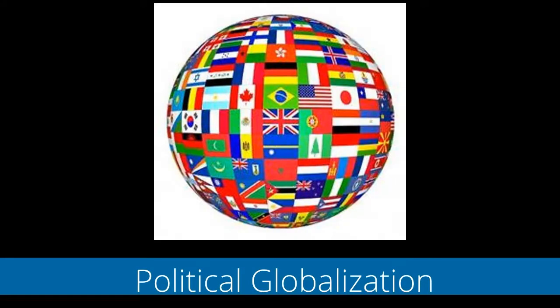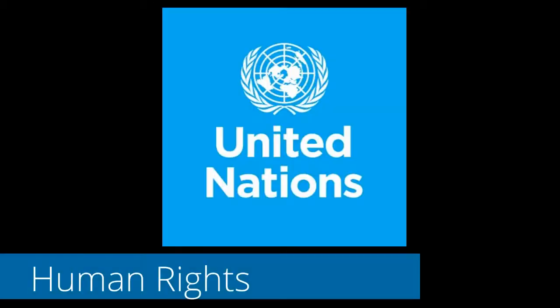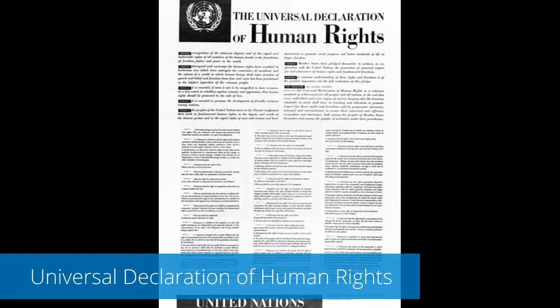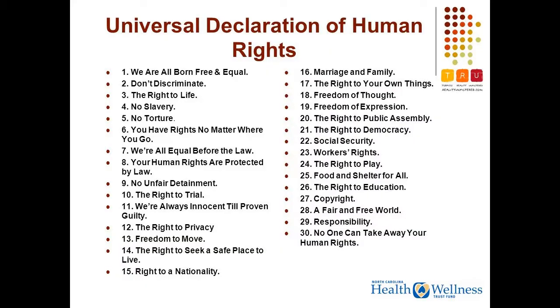Thirdly, political globalization — this refers to how globalization shapes our role as global citizens and the relationship that nations have with each other. An example that had its beginnings just after World War II is the concept of human rights. The United Nations, created after World War II to bring peace and stability to the world, adopted the UN Declaration of Human Rights, which lists 30 basic human rights all humans are believed to possess, such as the right to life, to be free and equal, to be protected from slavery, torture, and inhumane treatment, and freedom of expression and thought.